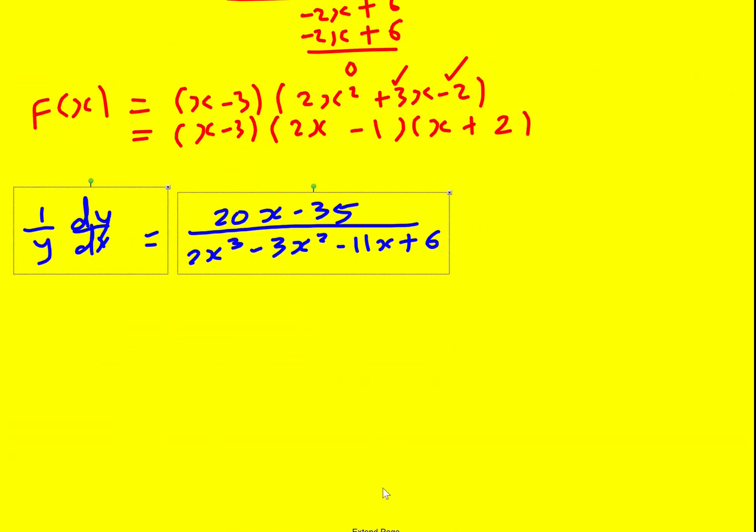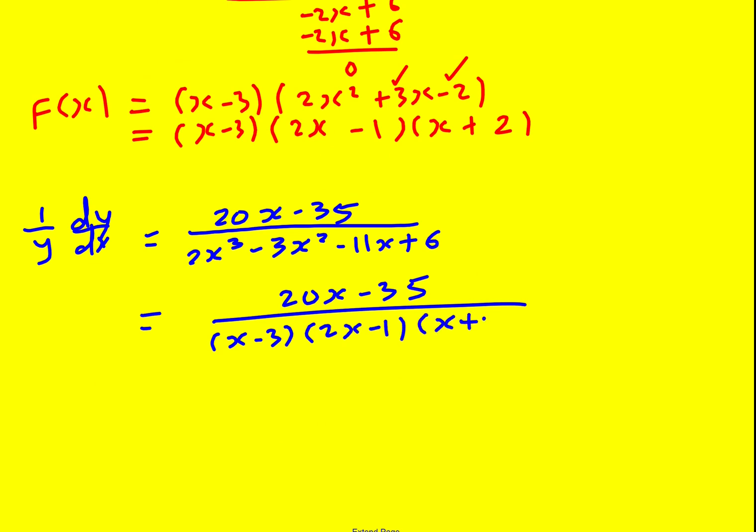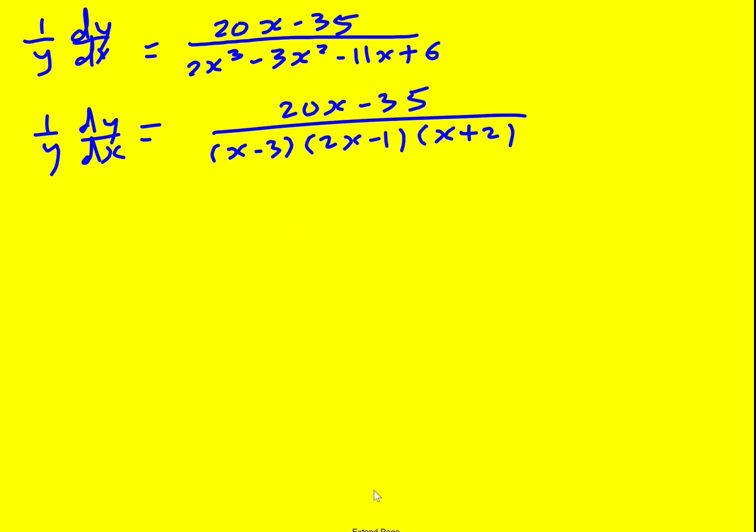Okay, so returning to here. Taking a big step forward. So this thing is going to equal 20x minus 35 all over x minus 3, 2x minus 1, x plus 2. But before I integrate, this is where the partial fractions come in. We need to write the right-hand side in partial fractions.